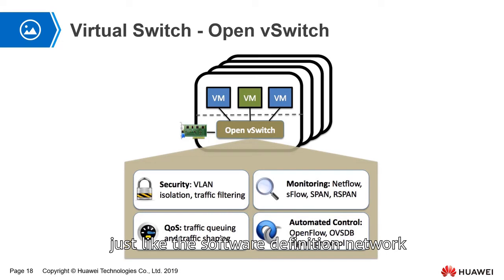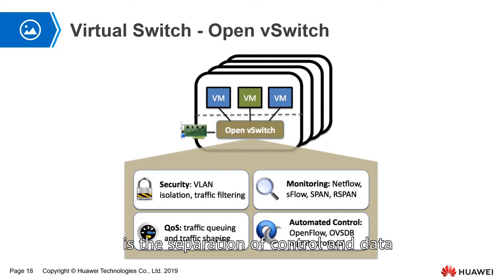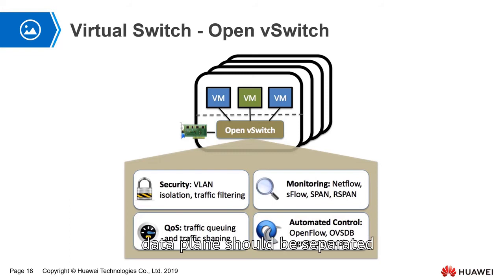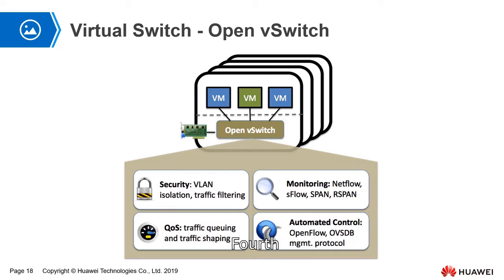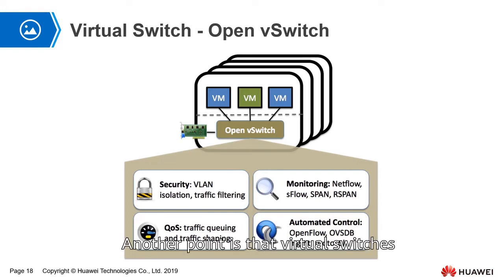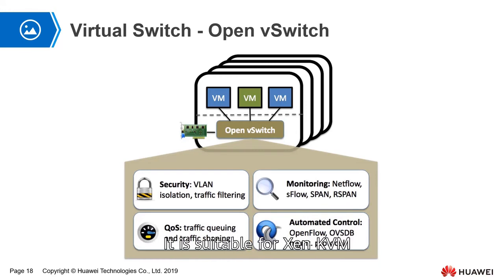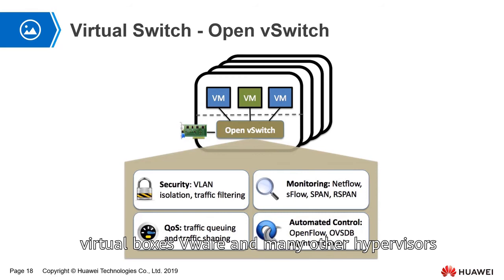Third, just like software-defined networking, the nature of SDN is the separation of control and data — the control plane and data plane should be separated. Only the virtual switch can separate the control plane and the data plane. Fourth, the virtual switch supports more protocols. Additionally, virtual switches are suitable for more scenarios and are compatible with many hypervisors including Xen, KVM, VirtualBox, and VMware.